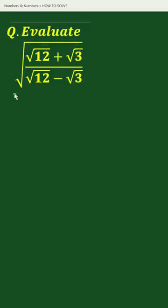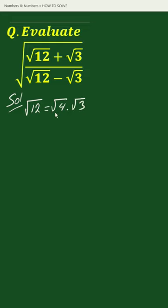The solution: √12 equals √(4 × 3), which equals √4 times √3. Since √4 is 2, we can write √12 as 2√3.